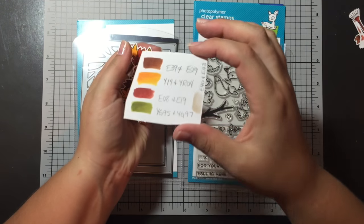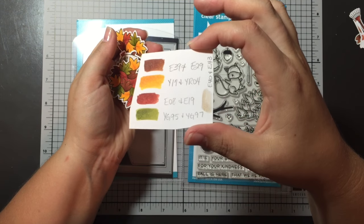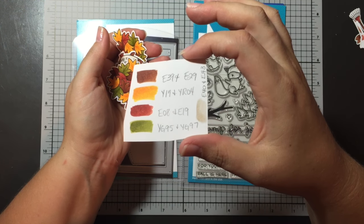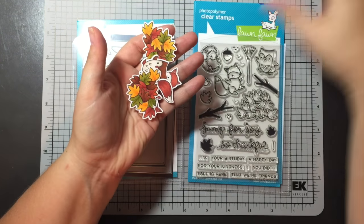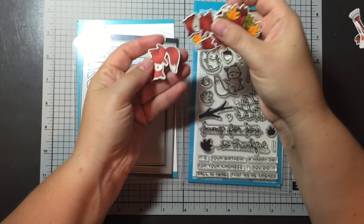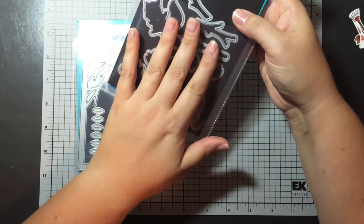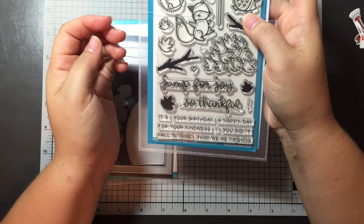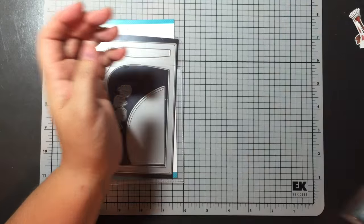Again, if anyone didn't see, these are the colors that I used for the markers. You can pause it and take a look. And I had colored them all in and then die cut them with the matching dies. This is the Jump for Joy from the Lawn Fawn new release.